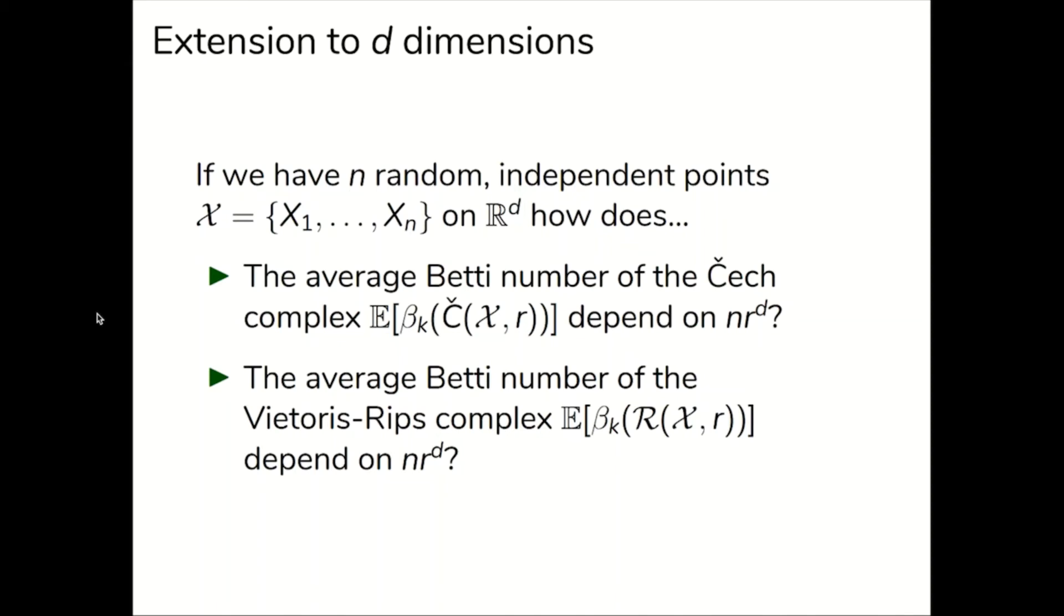Note that E stands for expectation, which is statistics talk for average, and just like in two dimensions, nr to the d is roughly the average degree of the random geometric graph underlying the Čech and Vietoris-Rips complexes.